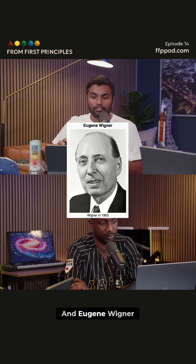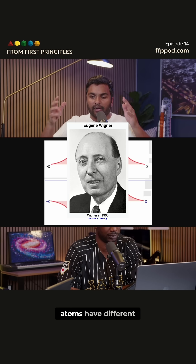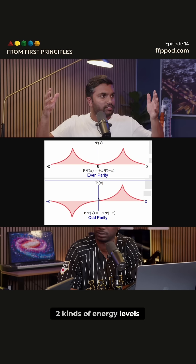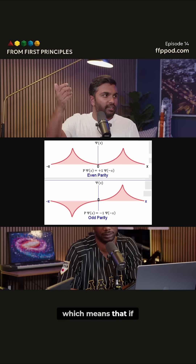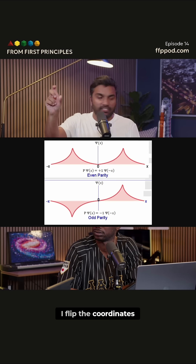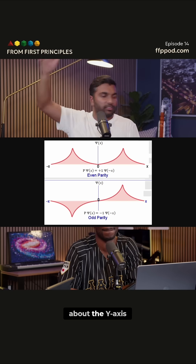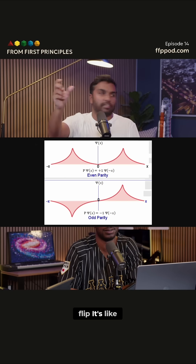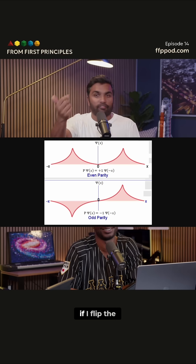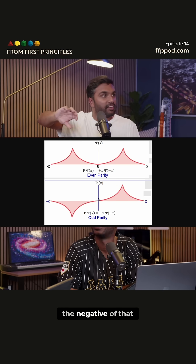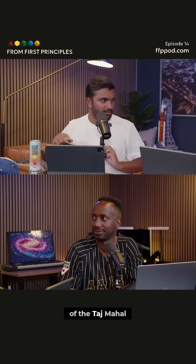Eugene Wigner created these things called selection rules. It turns out that atoms have two kinds of energy levels. There's one that has even parity, which means that if I flip the coordinates, it's the same — like if it's symmetric about the y-axis. And then there's another one where if I flip the parity, it's going to be the negative of that.